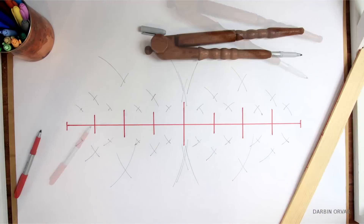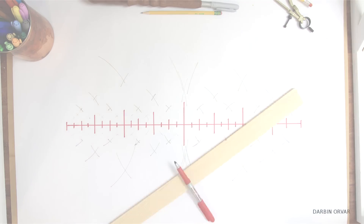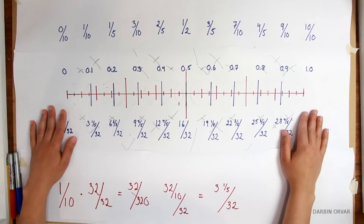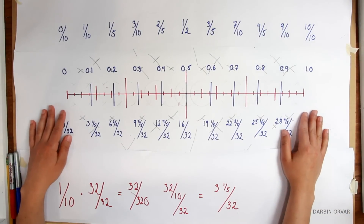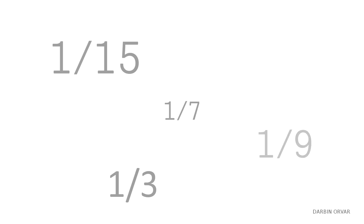Not exactly easy and natural — not like dividing in half. But you can do it. In fact, you can do it with any fraction you're looking for. If you need to know what 1 seventh of a distance is, or 1 fifteenth, it's the same process.